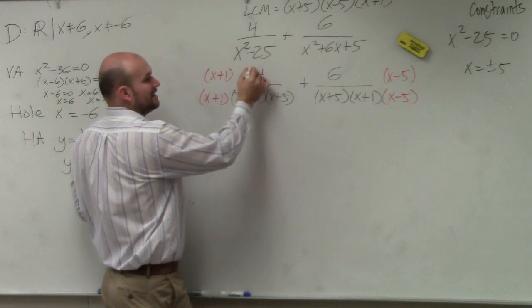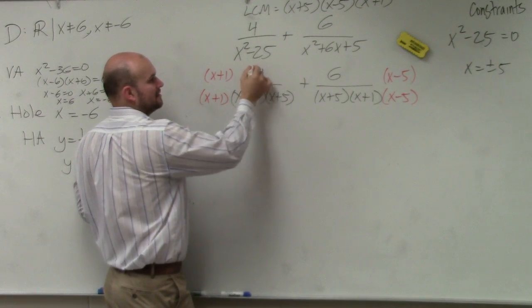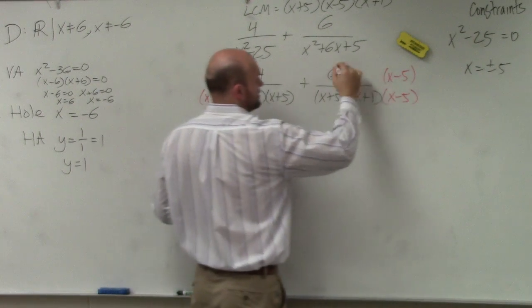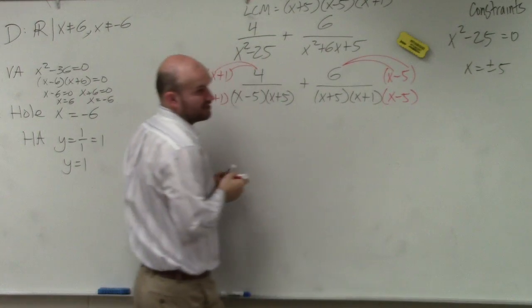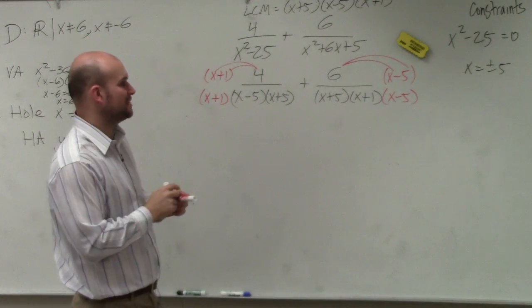Then what I would do on the numerator is, when you're multiplying these, I would apply distributed property. Because we are going to want to, so once we apply the operation, we're going to want to simplify.